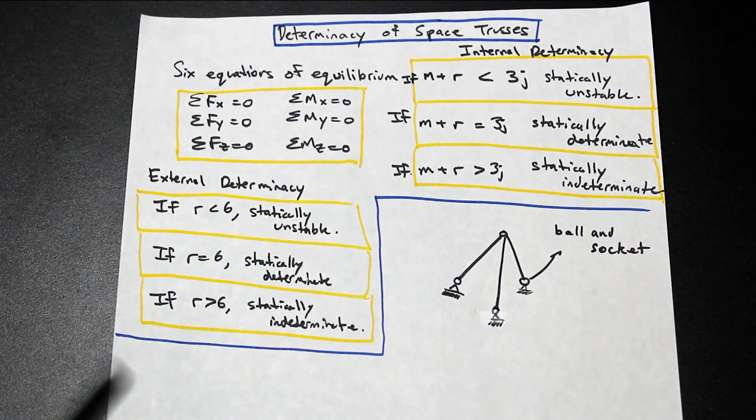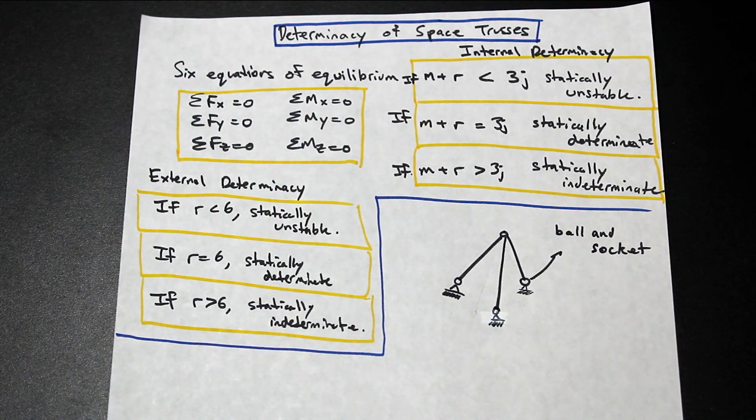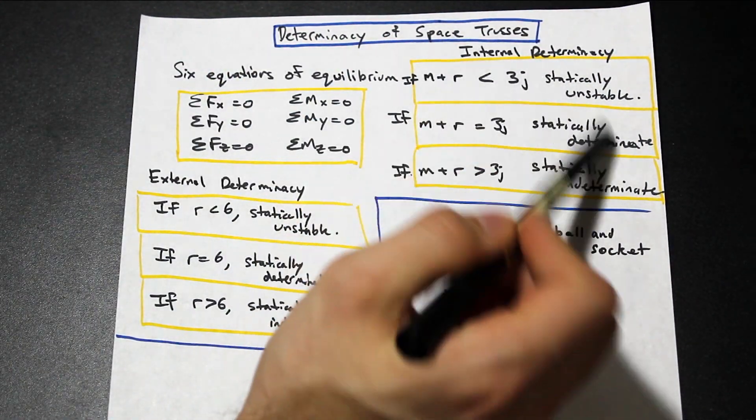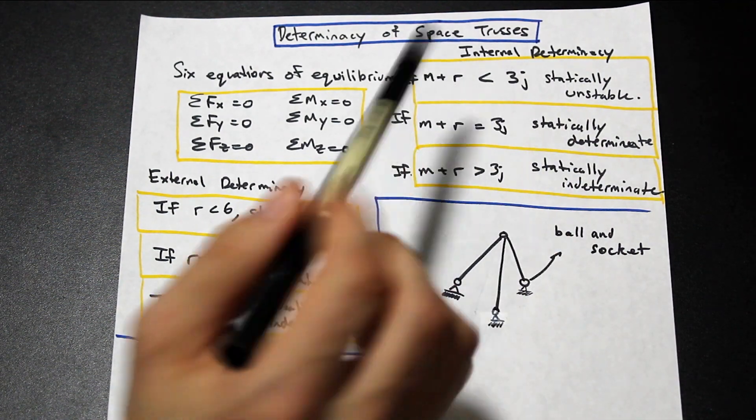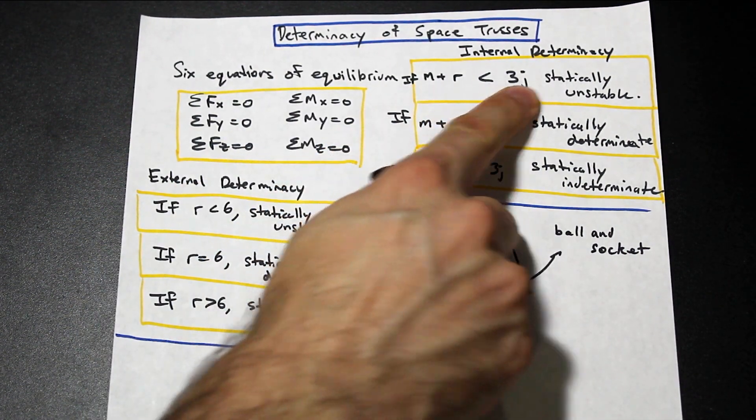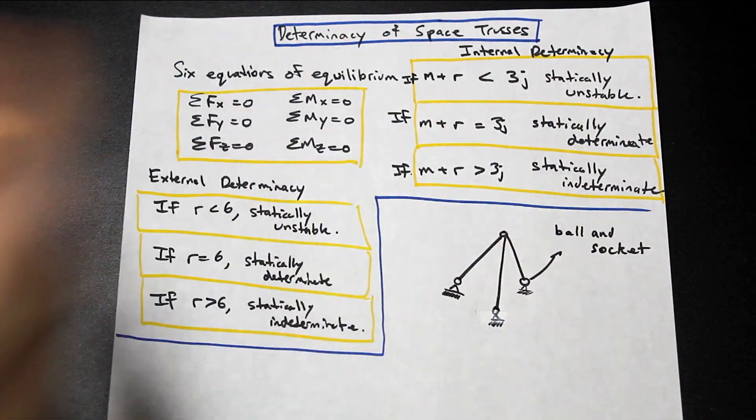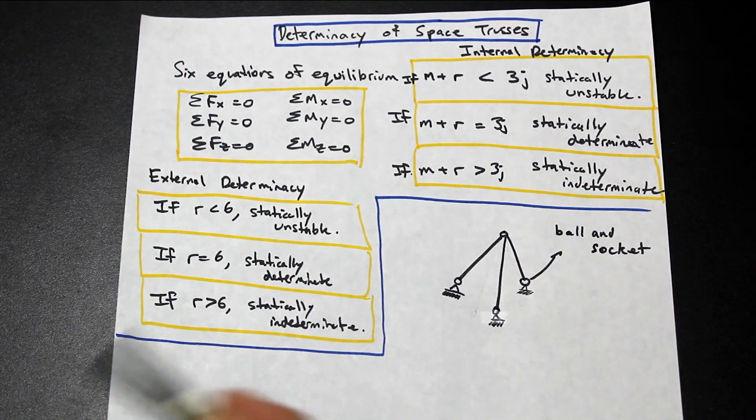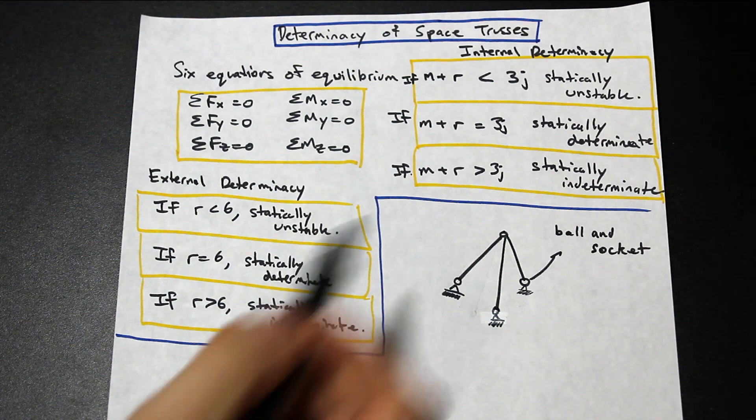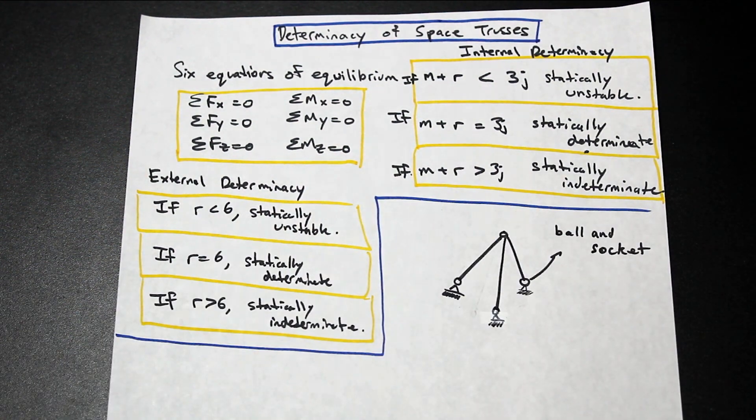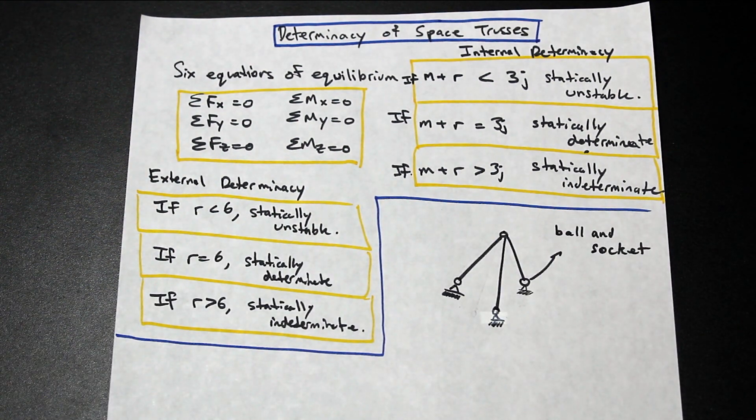The internal determinacy is kind of the thing that we were talking about previously with two-D trusses. So this here, we have if the number of members plus the number of reactions is less than three J, we have a statically unstable structure. So it's exactly the same as before. And we have statically determinate, statically indeterminate, but it's exactly the same concept. It's just now 3D.